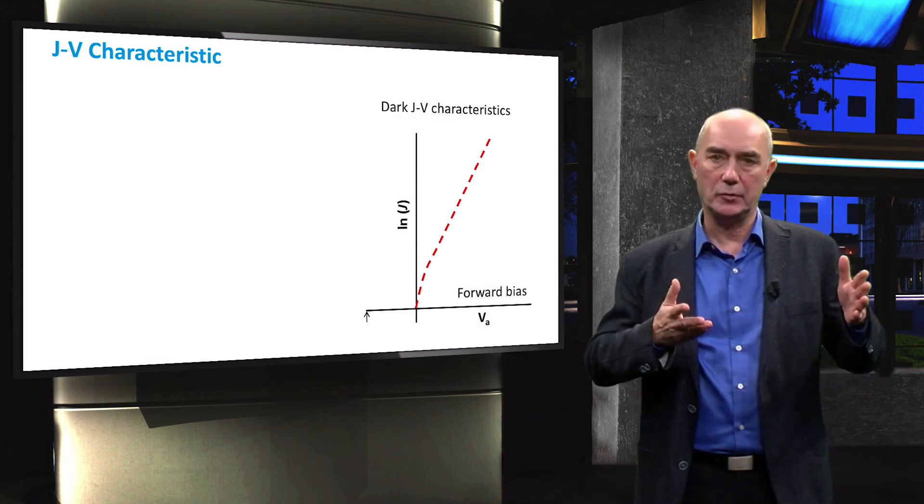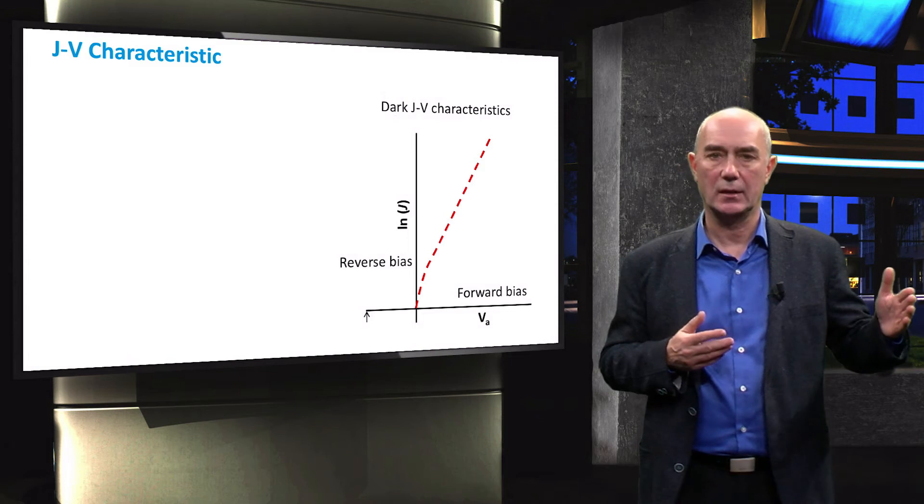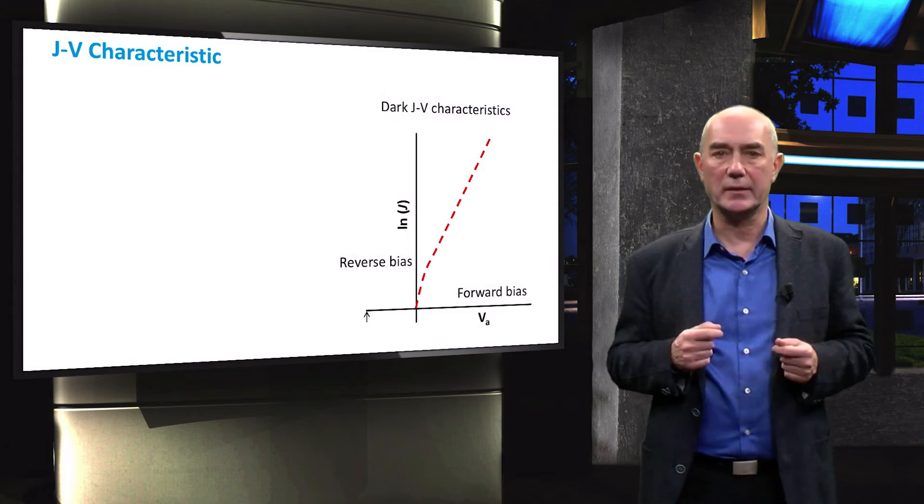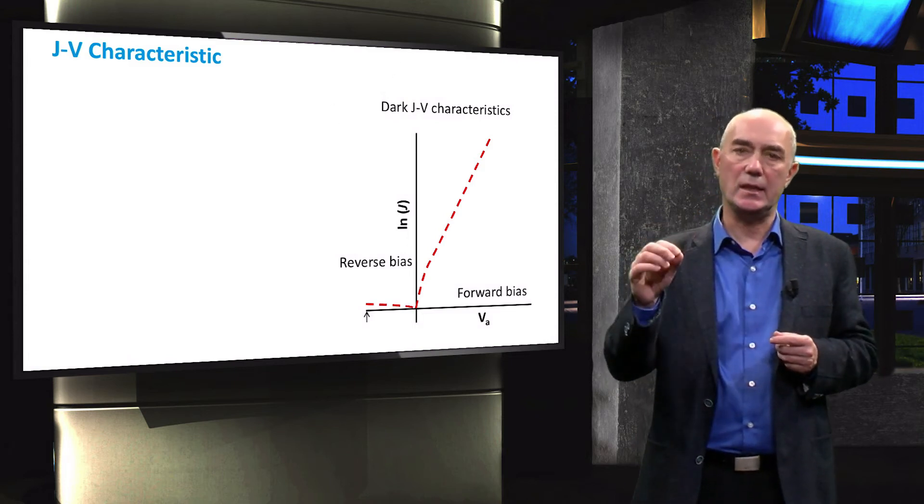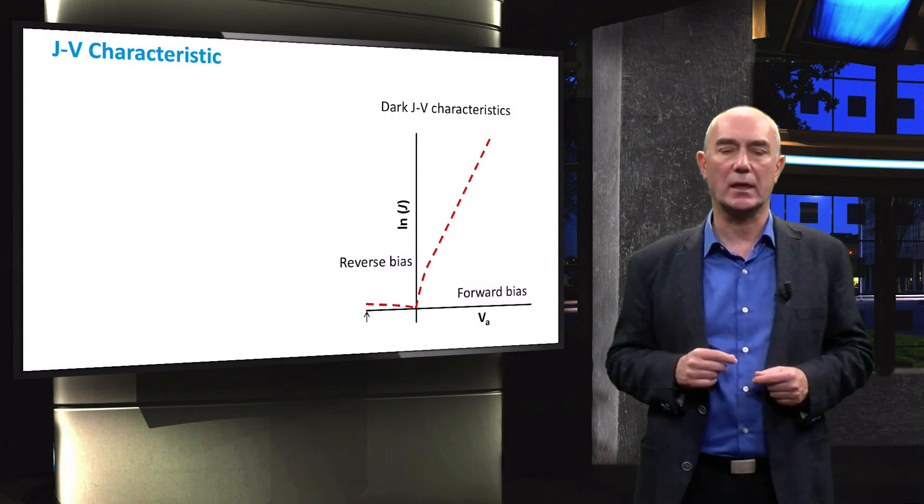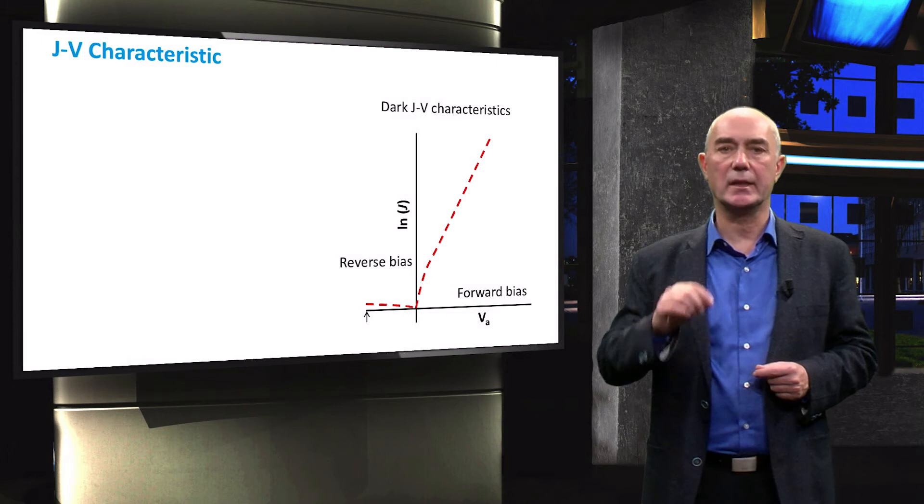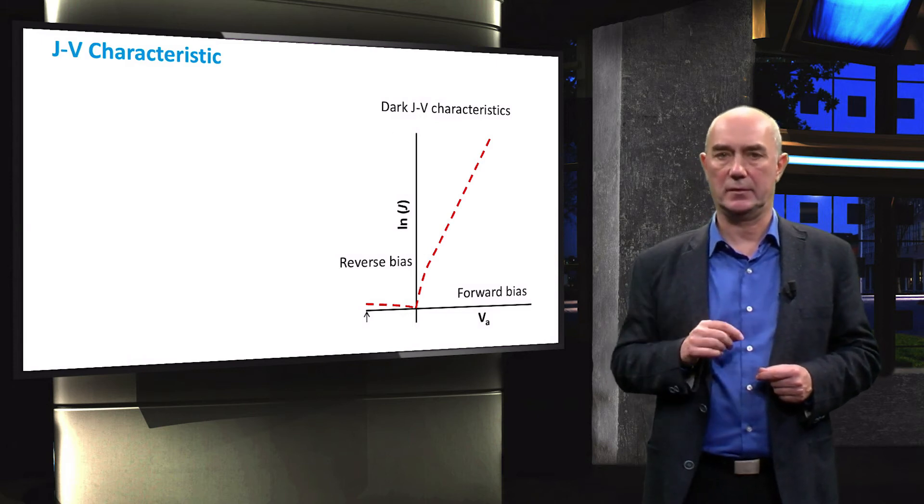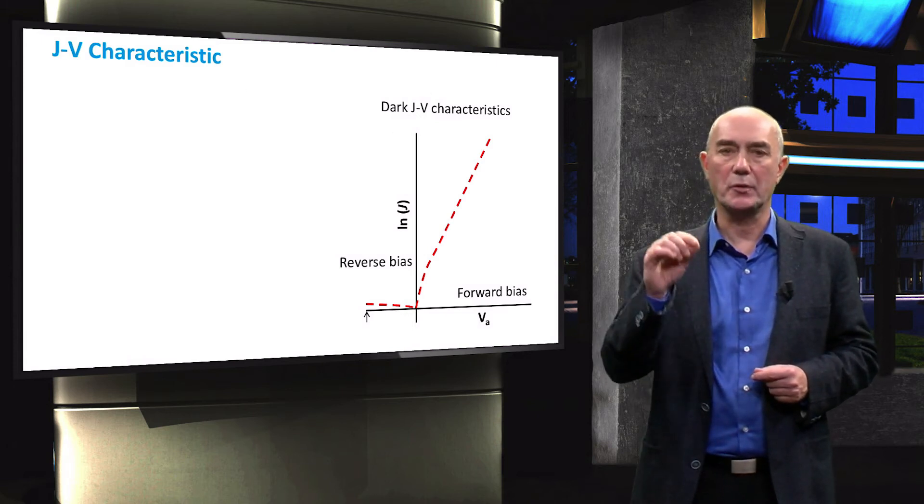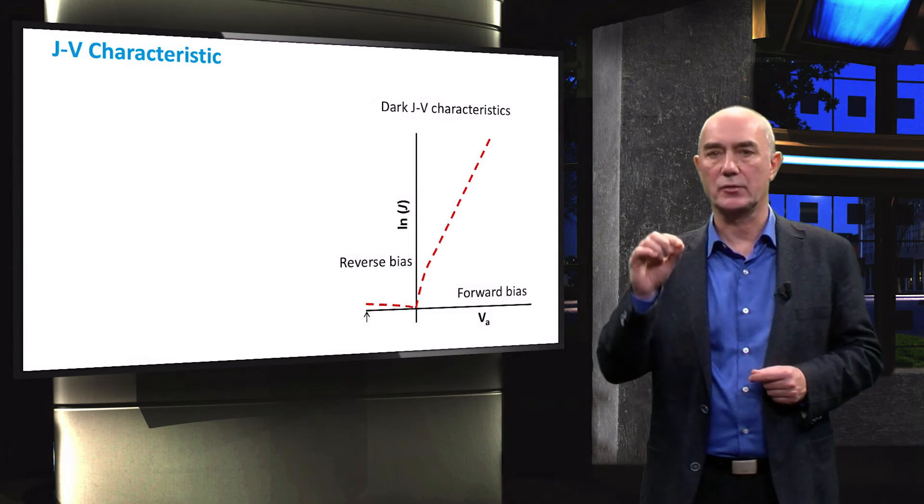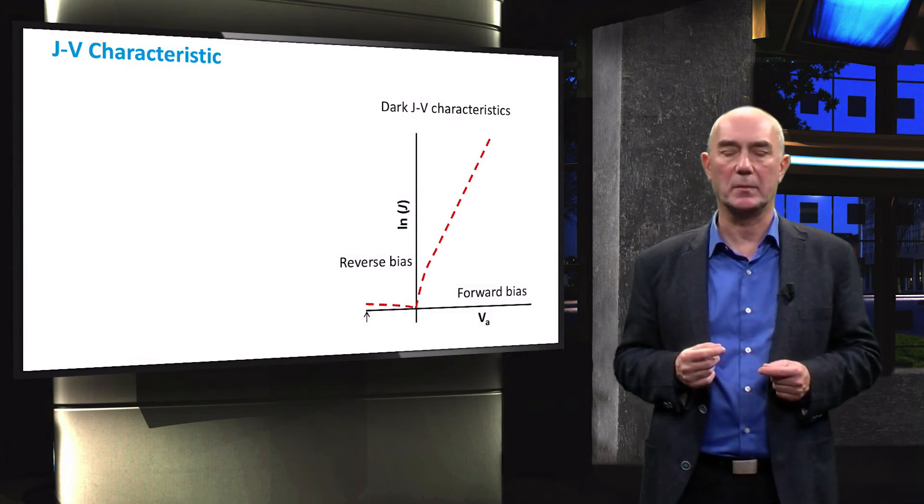Now let's look to the reverse bias region. When we plot the current density there, you can see that there is a small amount of current. It is important to note that this current density is actually negative and is only positive in this plot because of the fact that the Y axis is logarithmic.